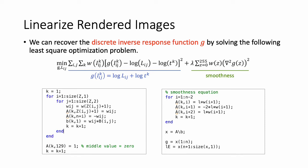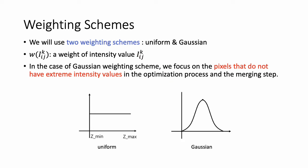But what does W denote in this problem? W denotes a weight of each intensity value. We will use two weighting schemes: Uniform and Gaussian. In the case of Gaussian weighting scheme, we focus on the pixels that do not have extreme intensity values in the optimization process and the merging step.